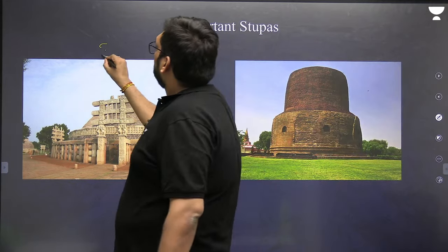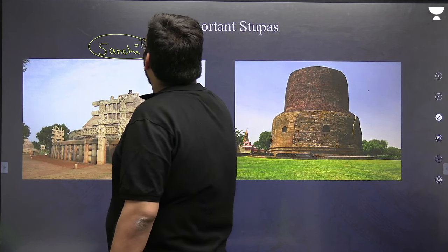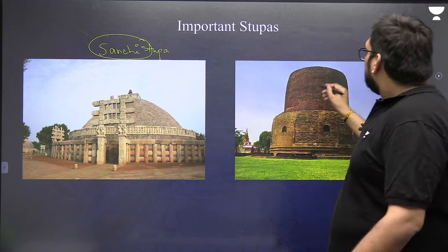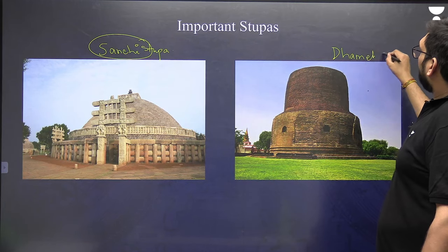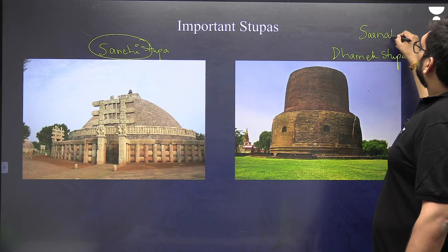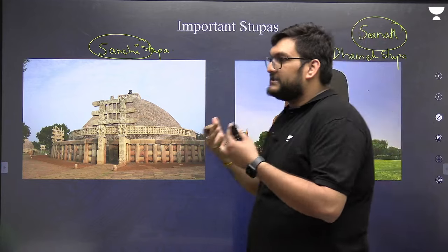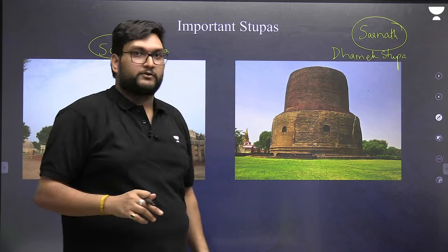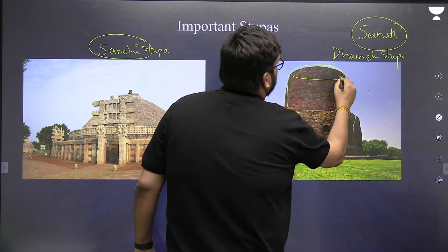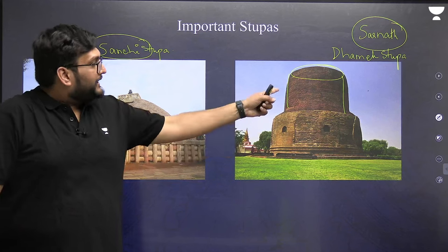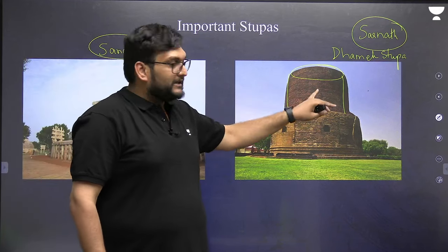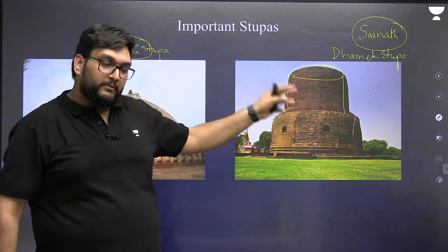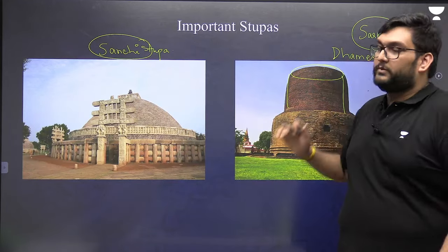There are four very important stupas to remember. The first is the Sanchi Stupa — the most celebrated, a UNESCO World Heritage Site, made by Ashoka, with beautifully carved gates featuring Jataka stories. The second is the Dhamek Stupa at Sarnath, which represents the first sermon given by Buddha himself — the Dharma Chakra Pravartana. It is unique because it has a cylindrical rather than hemispherical shape.